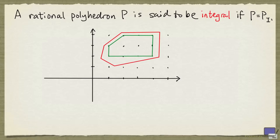A rational polyhedron p is said to be integral if p equals the integer hull of p. Here the red polyhedron is not integral because its integral hull is given by the green portion, and the green and the red do not coincide.